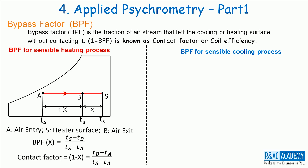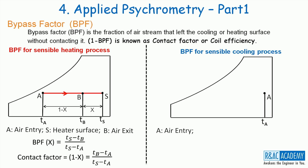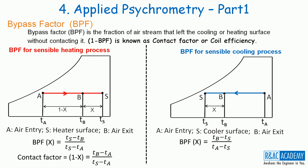For the sensible cooling process, let A be the state of air entering the cooling coil and S be the cooler surface. If all air contacts the cooler surface, the exit state would be S; but practically some air always bypasses the coil, so exit state B lies between A and S. The bypass factor for sensible cooling = (TB − TS) / (TA − TS), and the contact factor (1 − X) = (TA − TB) / (TA − TS).